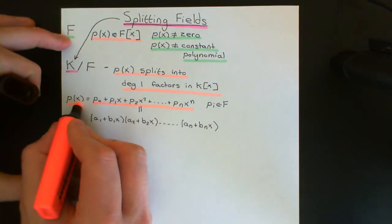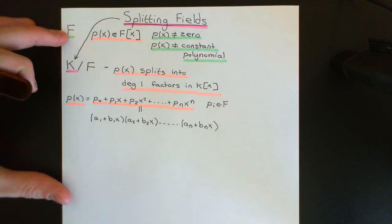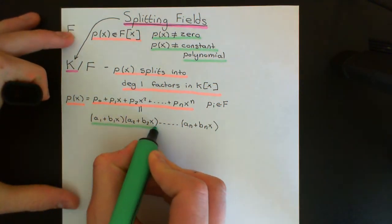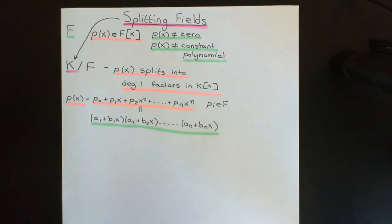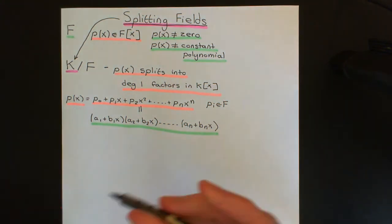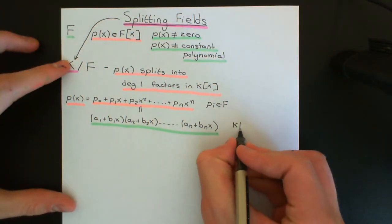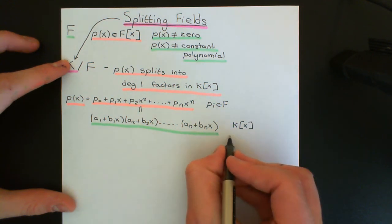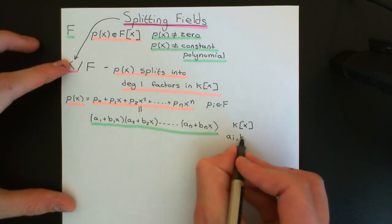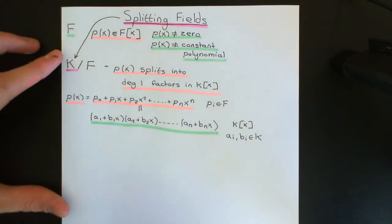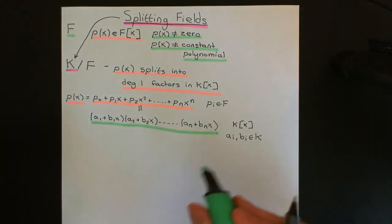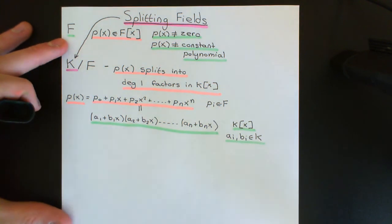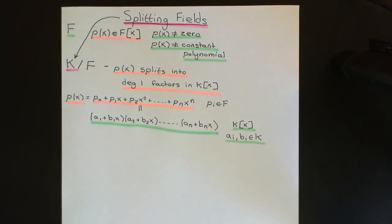So here is our initial polynomial, an element of the ring of polynomials over the field capital F, and we have now factored it into degree one factors. This works in the ring of polynomials over the splitting field capital K, so all of the coefficients — the Aᵢ and the Bᵢ — are going to be elements of the splitting field capital K. That's condition number one.